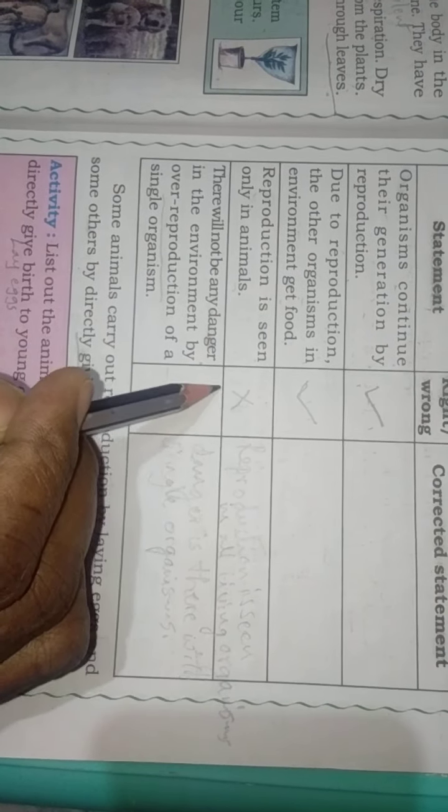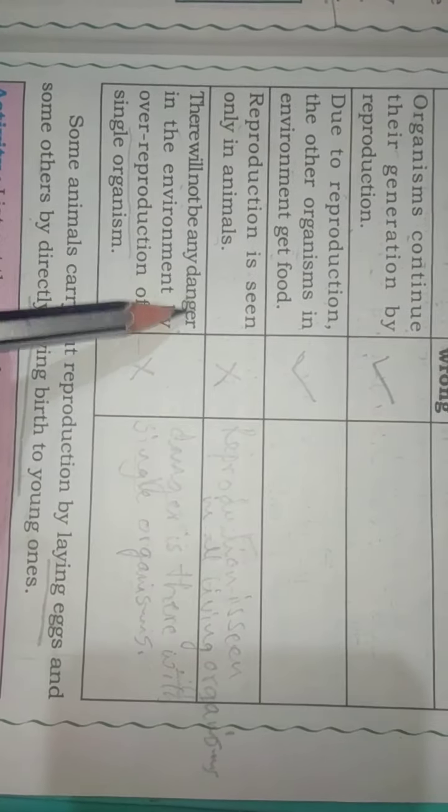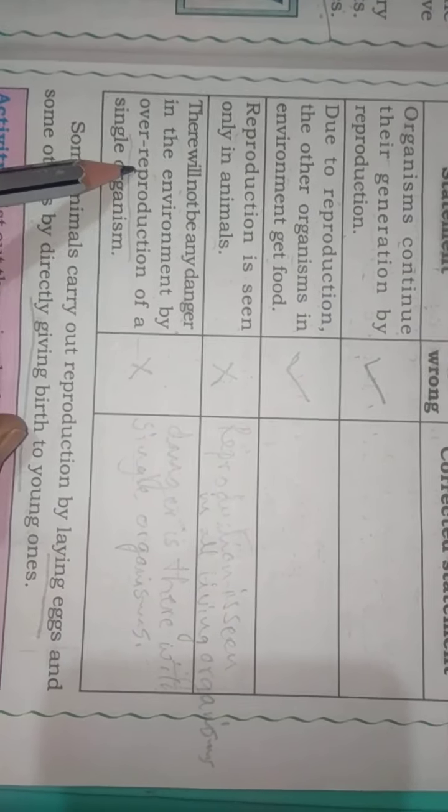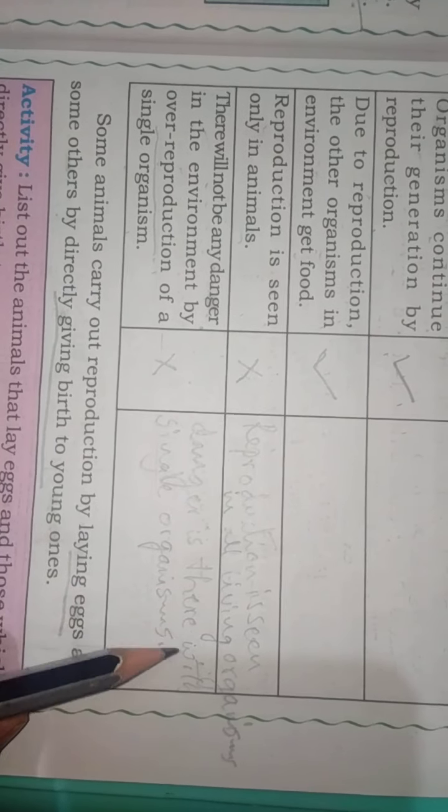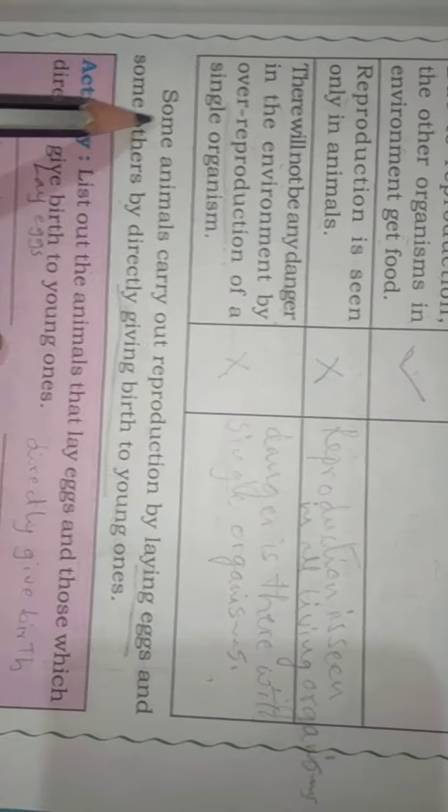Reproduction is seen only in animals — can we see reproduction only in animals? No, we can see it in birds and human beings also. So that statement is wrong. Reproduction is seen in all living organisms. There will not be any danger in the environment by over-reproduction of a single organism — if only one single organism's reproduction is seen in the environment, it is a danger. So that statement is also wrong.